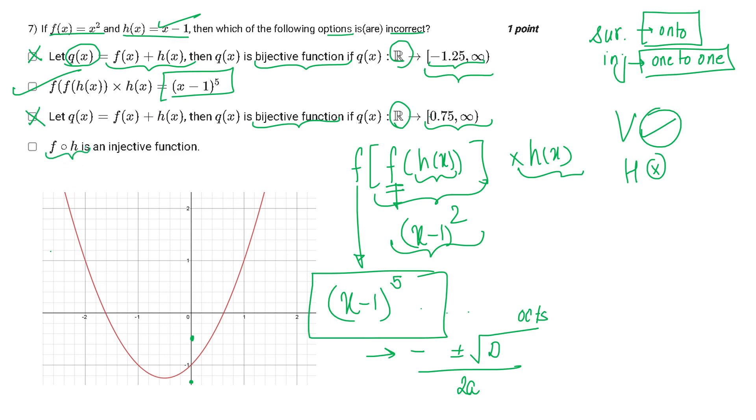Now let's talk about f of h. My f is x squared, in which I have to put the value of h, which is x minus 1. This is also a quadratic equation. Since this is a quadratic equation, it can't be injective, it can't be one-to-one, because it doesn't pass the horizontal line test. Therefore the only correct option is B.